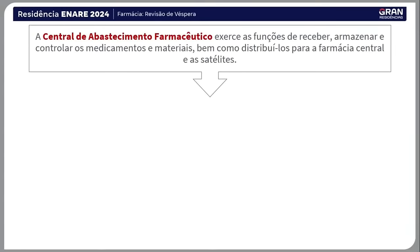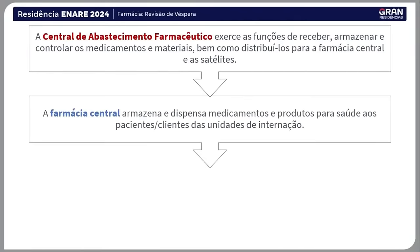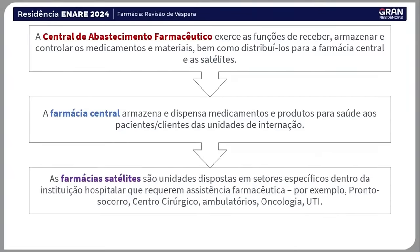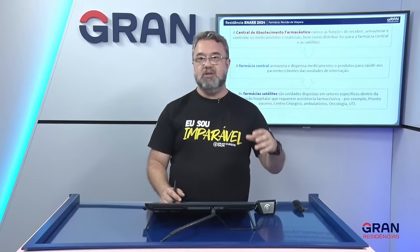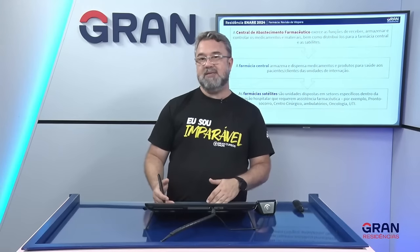Dentro do ambiente hospitalar, você vai ter uma central de abastecimento farmacêutico (CAF) vinculada a uma unidade de farmácia central, e essa central também estará vinculada a unidades satélites. O CAF recebe o volume maior de mercadorias — medicamentos, OPME —, faz o processamento da entrada de nota, inicia a rastreabilidade, cadastro no sistema, e dispensa para a unidade de farmácia central. Na farmácia central, realiza-se todo o processo de preparar os medicamentos conforme o sistema de distribuição do hospital.